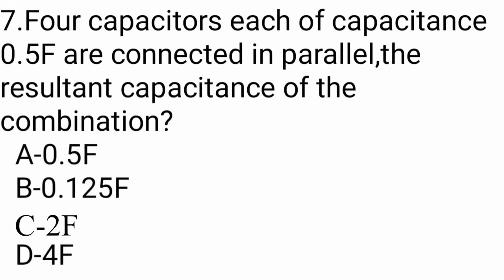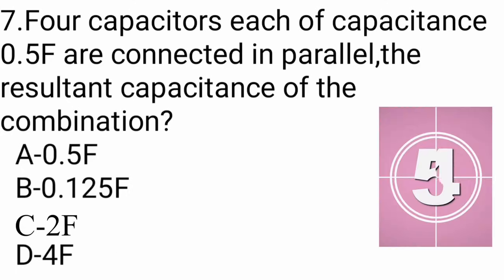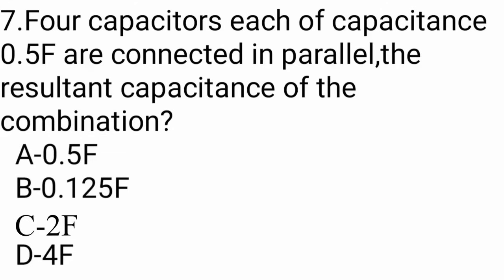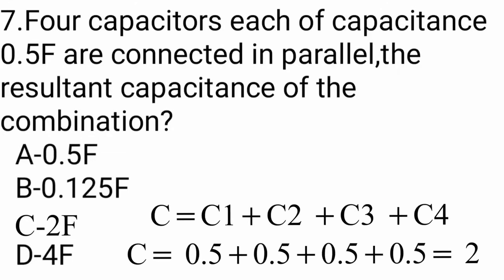Question number 7: Four capacitors each of capacitance 0.5 farad are connected in parallel. The resultant capacitance of the combination — options: 0.5F, 0.125F, 2F, or 4F. The answer is 2F. When capacitors are connected in parallel, the resultant capacitance is the sum: 0.5 + 0.5 + 0.5 + 0.5 = 2.